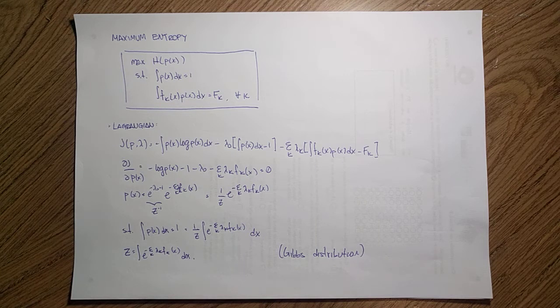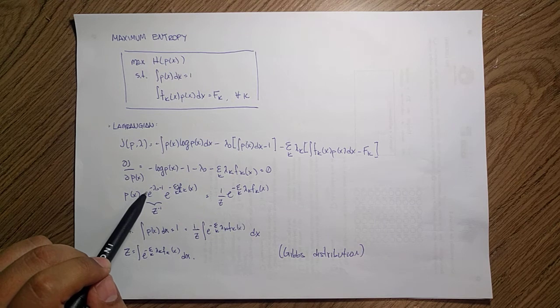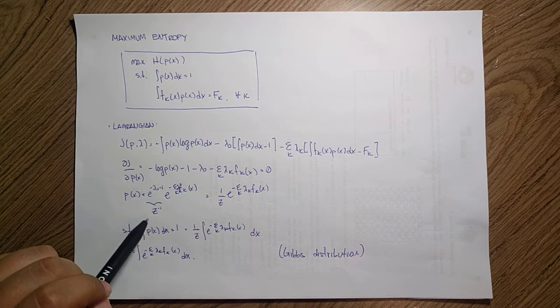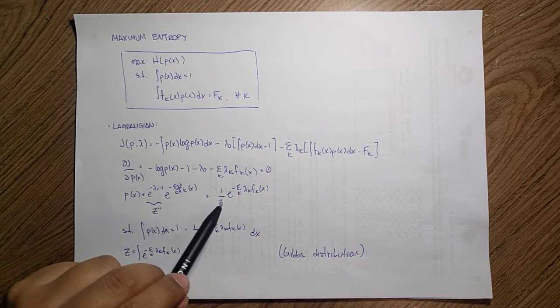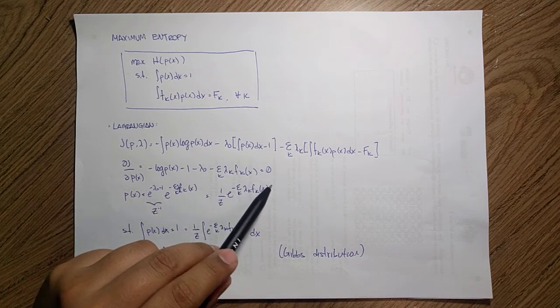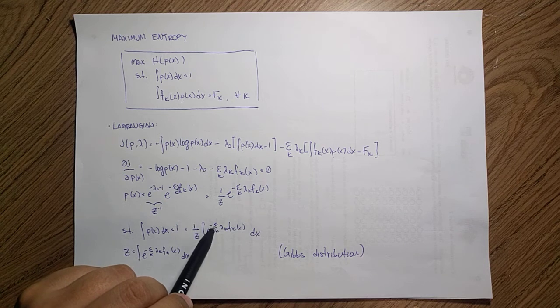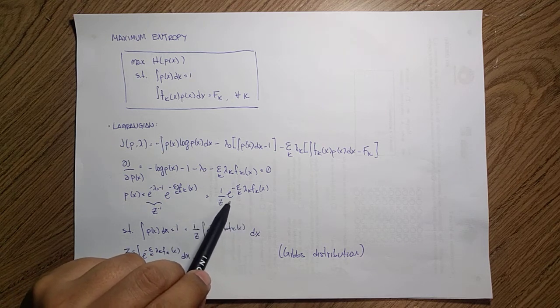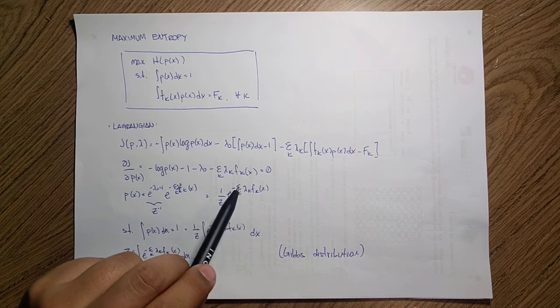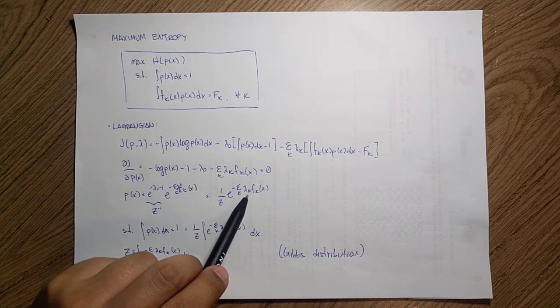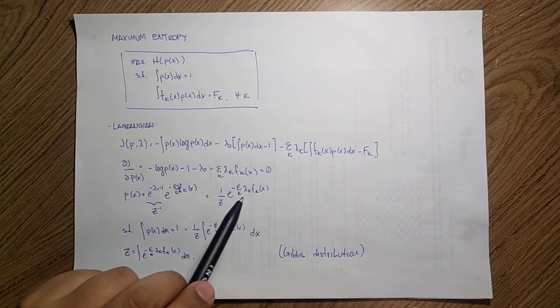If we call this e to the minus lambda zero minus one, that inverse means that I have the same shape as we have for the particular exponential family. This is basically one over Z times the exponential of minus the summation of my lambda_k's and the f_k's, the restrictions that I have.